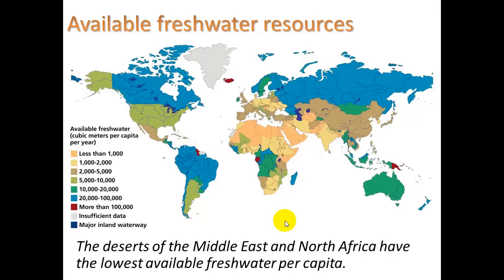Looking at available freshwater resources globally, our country is in a reasonable middle zone. But places like the Middle East have very little freshwater per capita, and Northern Africa is the same. Europe also has low freshwater availability yet very high population density, so they are more proactive about water management — greater numbers of low-flow faucets, low-flow toilets, and waterless urinals, which originated in Europe and are now common in new buildings.